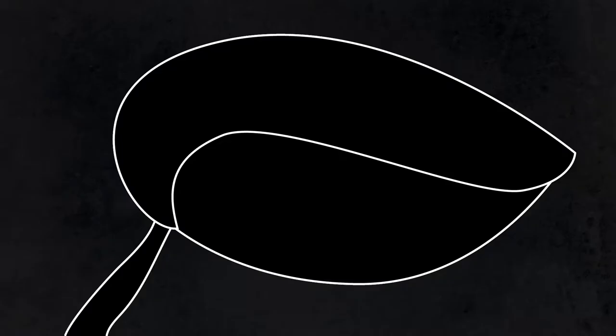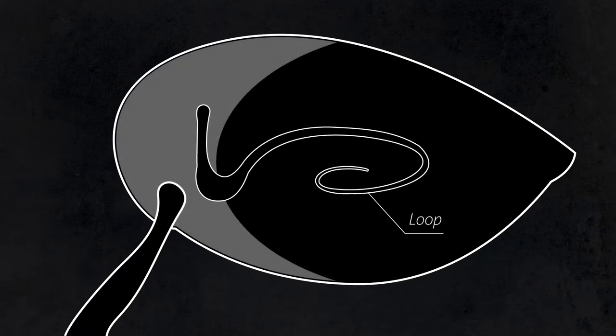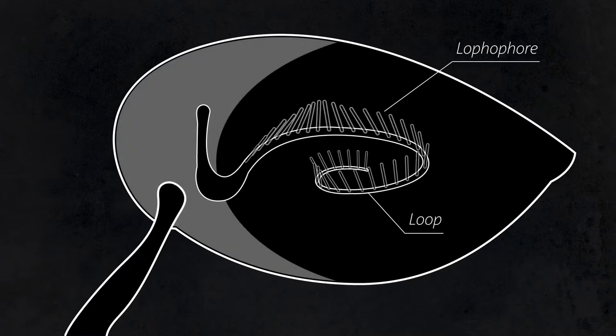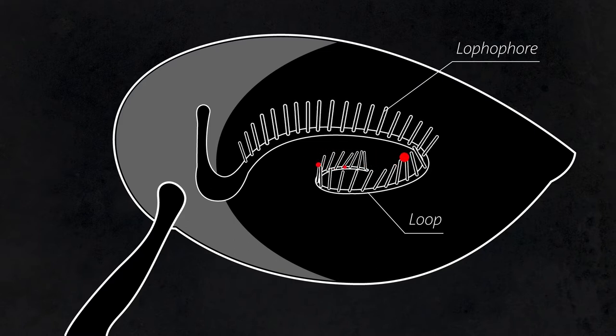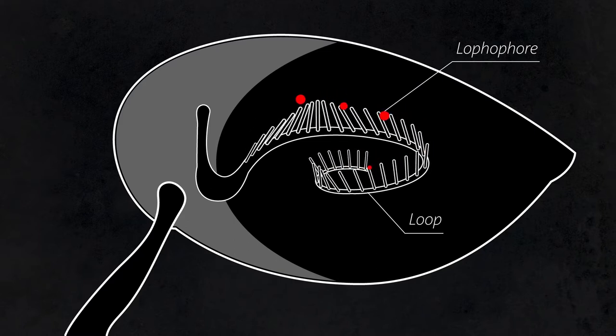The way these animals filter feed is also quite different. Bivalves filter feed using a modification of their gills, whereas brachiopods have a whole separate structure. This structure is known as the loop, and on the loop hangs an organ called the lophophore, which is like a little conveyor belt of tentacles that passes food along.